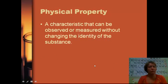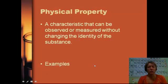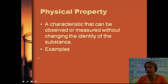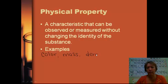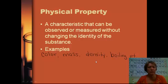Next, we're going to talk about physical properties. Physical properties are properties that can be observed or measured — so they can be intensive or extensive — without changing the identity of the substance. Some examples of physical properties include all of those intensive and extensive properties we just talked about: color, mass, density, boiling point. All of these can be measured without changing the substance; we can observe them without turning the substance into something new.